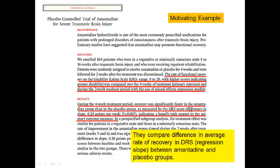Today's motivating example is a placebo-controlled trial of amantadine for severe traumatic brain injury. This study enrolled 184 patients who were in vegetative or minimally conscious states for 2 to 16 weeks after traumatic brain injury. Half were randomized to treatment with amantadine and the other half to placebo. The rate of functional recovery on the disability rating scale (DRS) was compared over four weeks of treatment — the primary outcome — and during a two-week washout period.